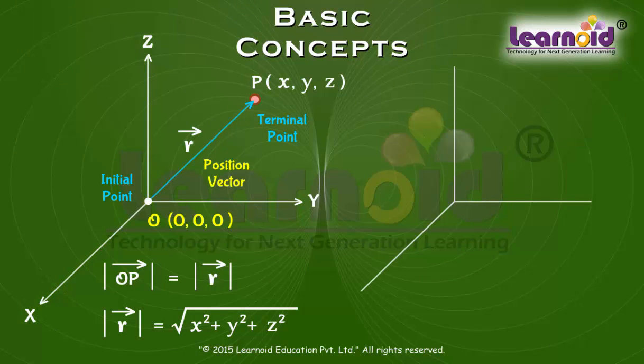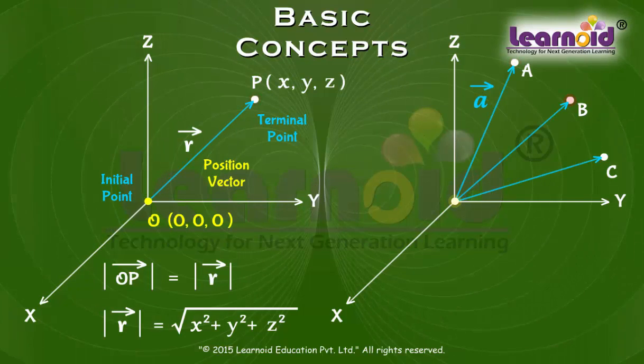Similarly, position vector of points A, B and C can be denoted as vector A, vector B and vector C.